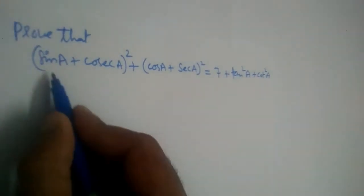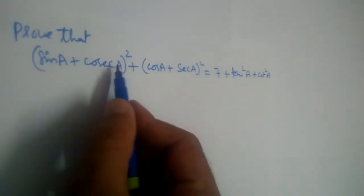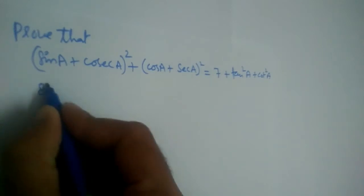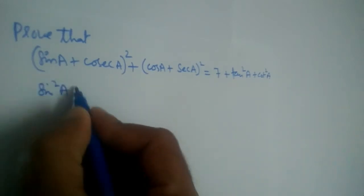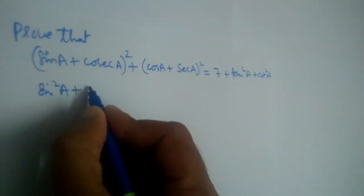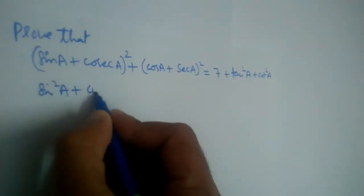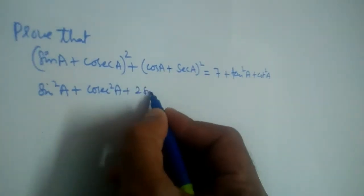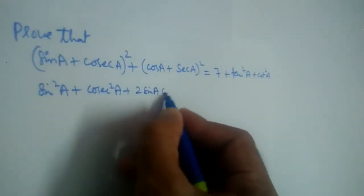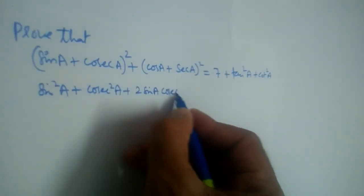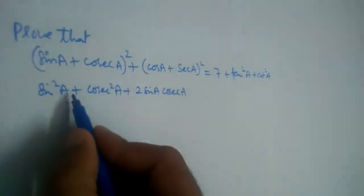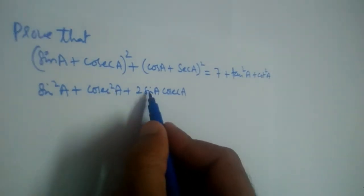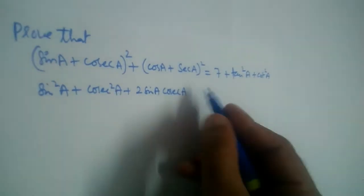Let us expand this using (a + b)² = a² + b² + 2ab. So we get sin²a + cosec²a + 2·sin·cosec a.